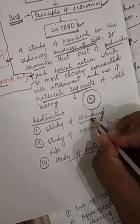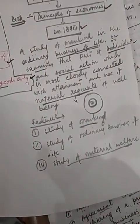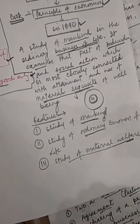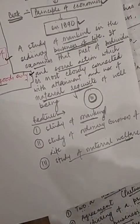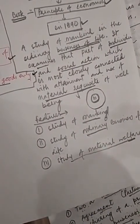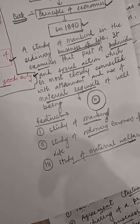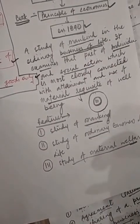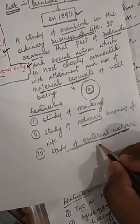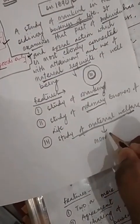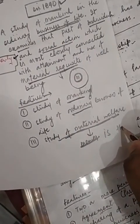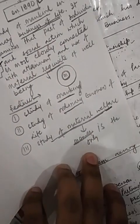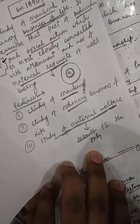The first feature is the study of mankind — it talks about human beings only. Study of ordinary business of life means it talks about the normal course of business — a study about a sound person, a sound man, who has an interest in economic matters or in money. Study of material welfare means money is the only source for achieving their satisfaction, for achieving their welfare, for satisfying their needs.